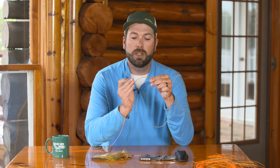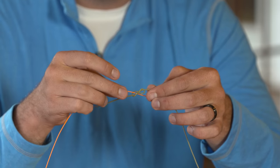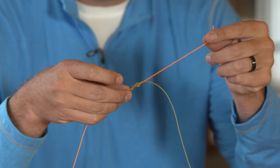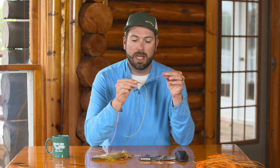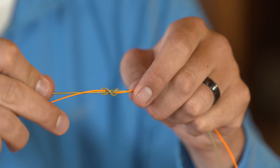We then take our class tippet and we're going to follow this tag end back through that figure eight. I would go down on this side and then up through this side, pull some class tippet through, and then I'm going to snug up this double overhand knot.